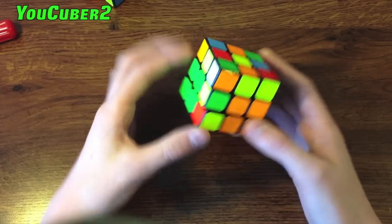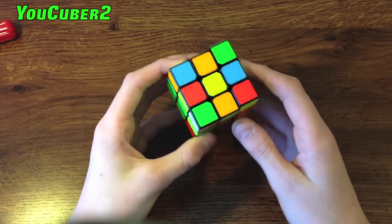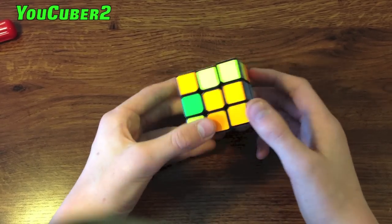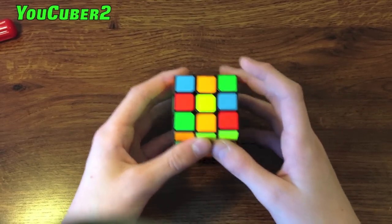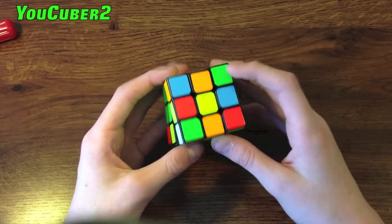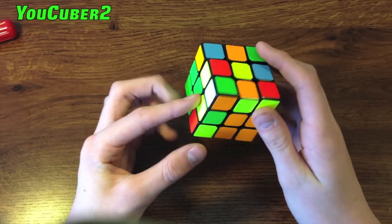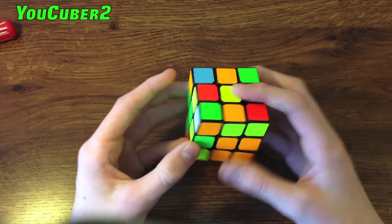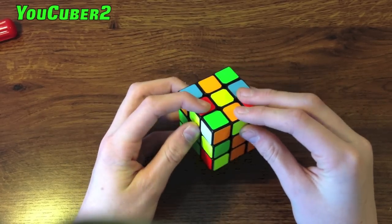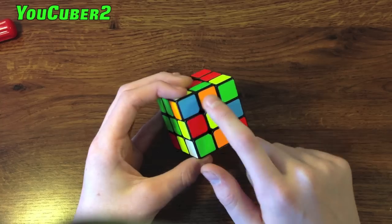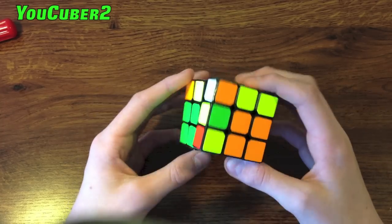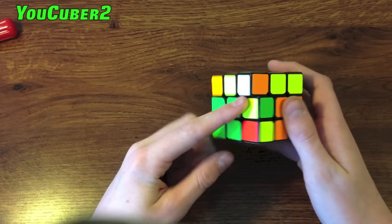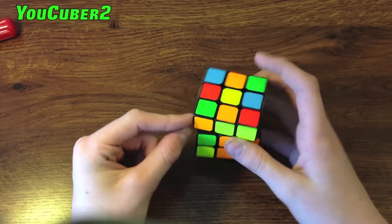So demonstrating this on a 3x3 we are going to be looking at good and bad edges. When I mean good edges I mean edges that are going to be flipped up so that yellow is facing up. So in this example there are no good edges because there is no yellow facing the top. When I mean bad edges I mean edges that aren't flipped right, meaning that they have the other color on top.